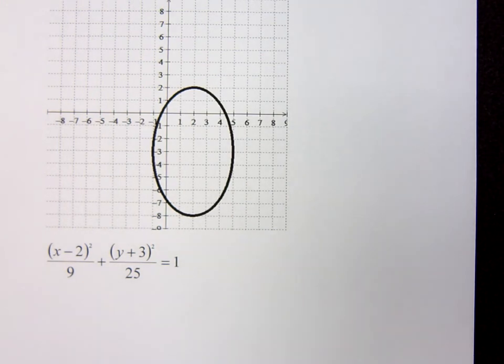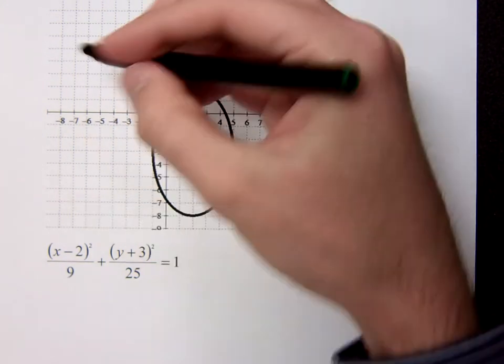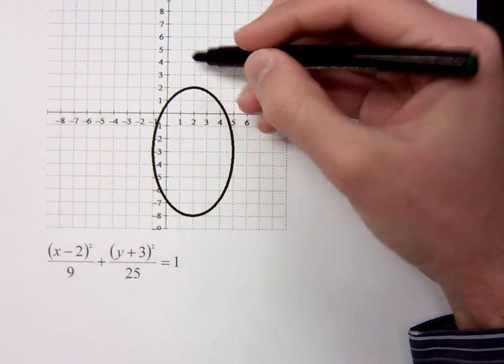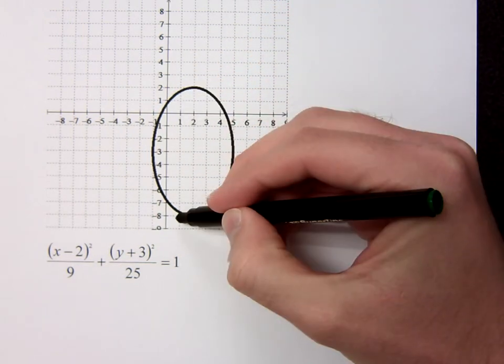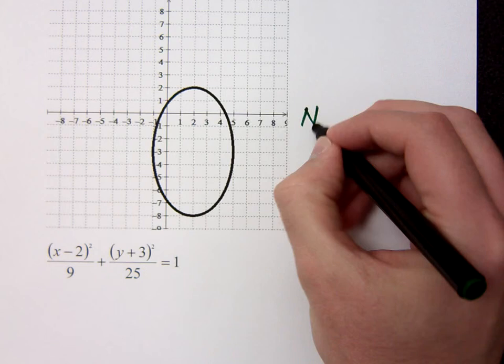Because if you do the vertical line test, it will pass through two points. If I do the vertical line test, over here, there's nothing. But here, I would hit two points, right? So this guy is not a function.